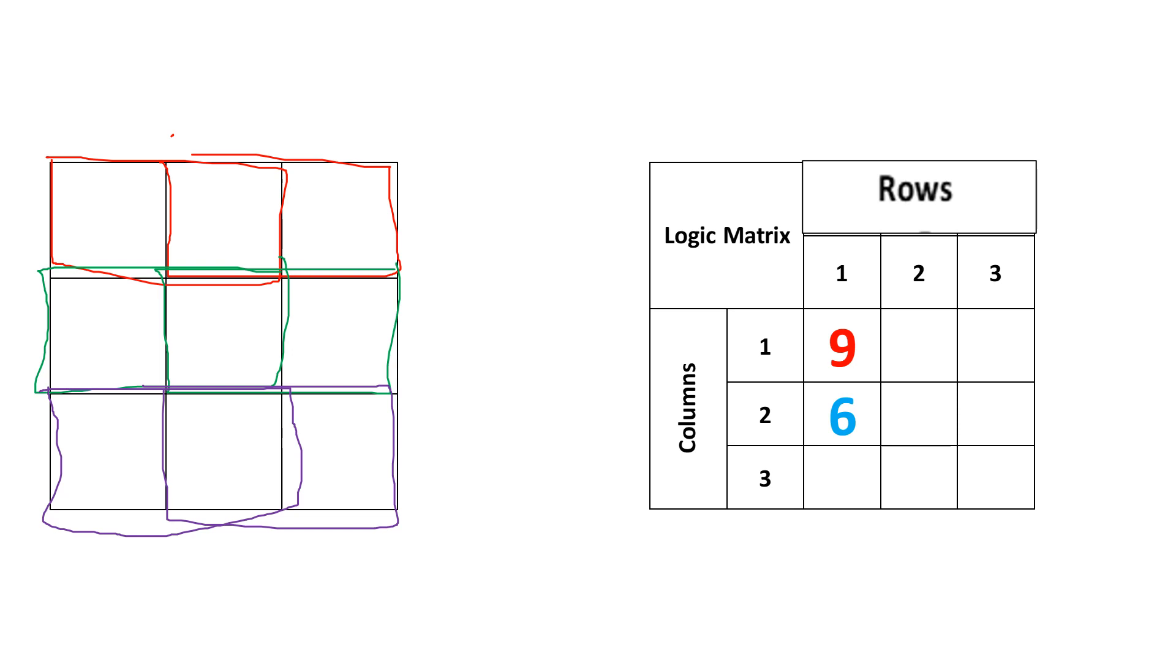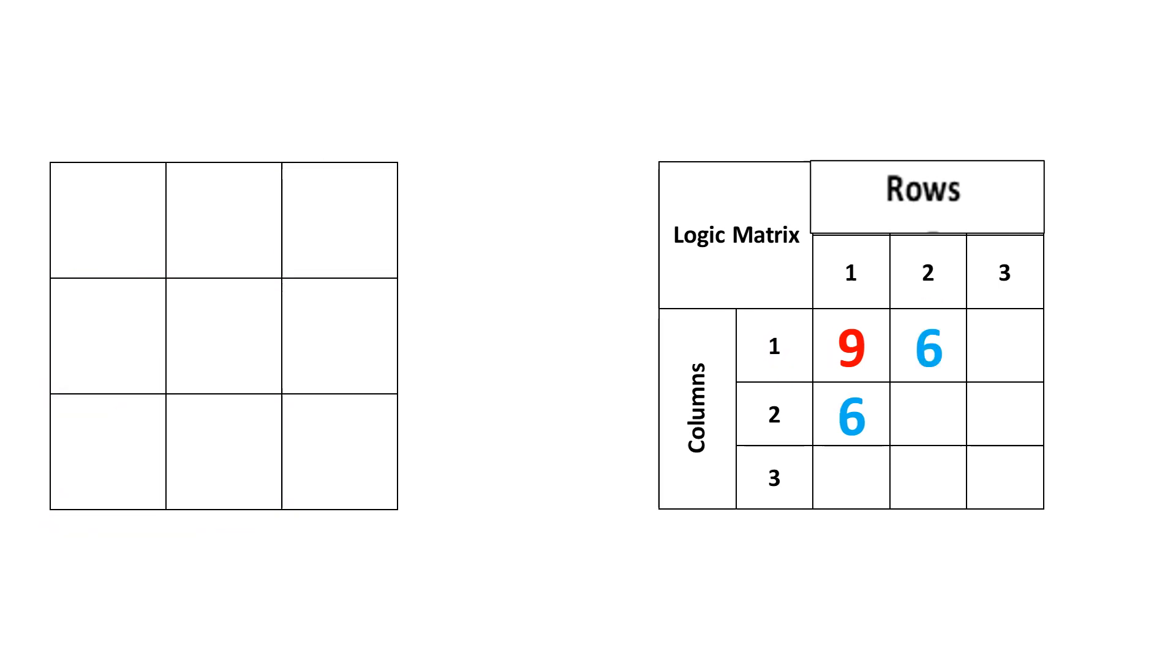I hope you can see 6 rectangles in the form of 1 row and 2 columns. Now the same way, if we talk about 2 rows and 1 column, we will also get 6. How come? Let's go and see further. That's how it becomes 6, you can count yourself.